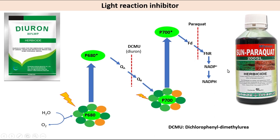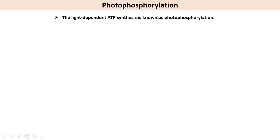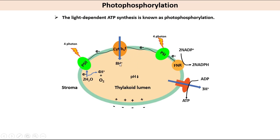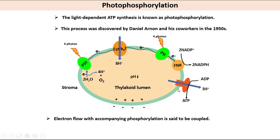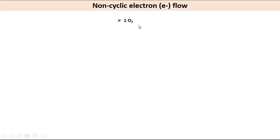Photophosphorylation is the light-dependent synthesis of ATP, discovered by Daniel Arnon and his co-workers in the 1950s. Excited P680 donates its electron to pheophytin. Oxidized P680 is reduced by oxidation of water. Water oxidation releases four protons into the lumen, and electron transfer through the cytochrome B6F complex releases additional protons, developing a proton gradient essential to ATP formation. Movement of protons from the thylakoid lumen to the stroma via ATP synthase drives ATP synthesis. Release of one molecule of oxygen requires oxidation of two water molecules, eight photons, four electron flows, and produces four ATP and two NADPH.